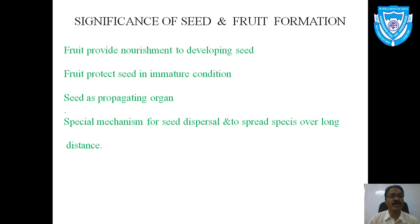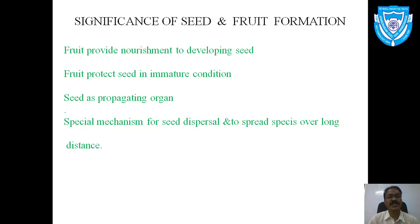The significance of seed and fruit formation: in gymnosperm only the seed is developed, but in angiosperm both the ovule converts into seed and the ovary converts into fruit — these are post-fertilization changes. First, the fruit provides nourishment to the developing seed, as fruit contains a maximum amount of food material. Second, the fruit protects the seed while it is in an immature condition.